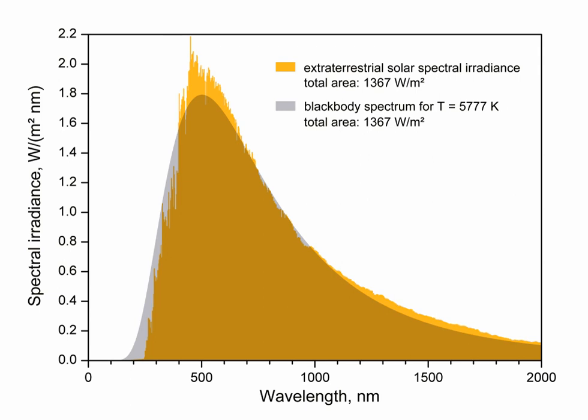The effective temperature of a body such as a star or planet is the temperature of a black body that would emit the same total amount of electromagnetic radiation. Effective temperature is often used as an estimate of a body's surface temperature when the body's emissivity curve is not known.